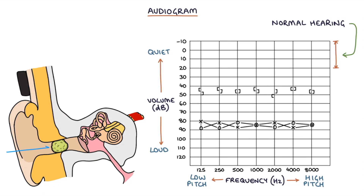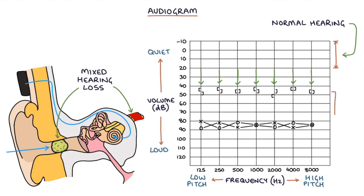Both air and bone conduction readings will be more than 20 decibels in patients with mixed hearing loss. However, there will be a difference of more than 15 decibels between the two, with bone conduction better than air conduction, plotted slightly higher on the chart.